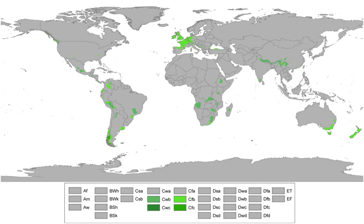An oceanic climate, also known as a marine or maritime climate, is the Köppen classification of climate typical of west coasts in higher middle latitudes of continents, and generally features cool summers relative to their latitude and cool winters, with a relatively narrow annual temperature range and few extremes of temperature, with the exception for transitional areas to continental, subarctic and highland climates.